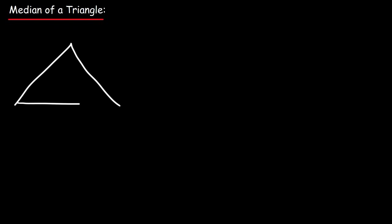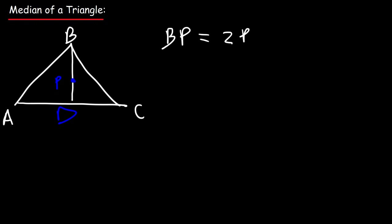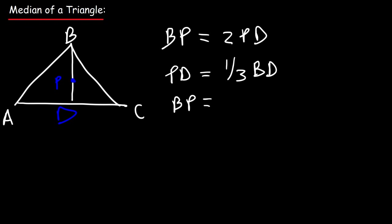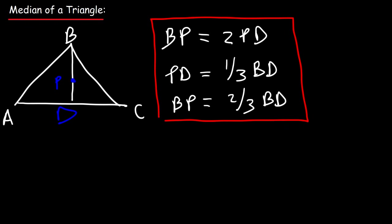Let's review the generic equations. In triangle ABC with centroid P and median BD: BP is always twice the value of PD. PD is always one-third of the median BD. BP — the distance between vertex and centroid — is always two-thirds of the median BD. Understanding these three equations lets you solve algebra problems associated with medians of a triangle.